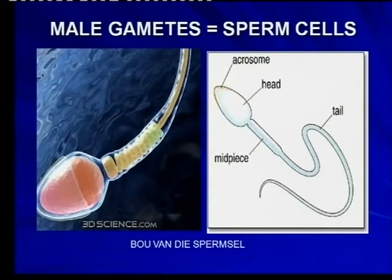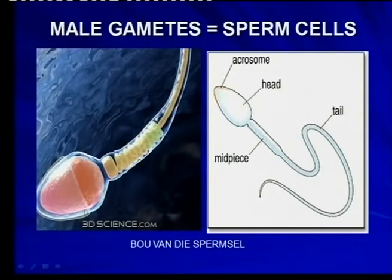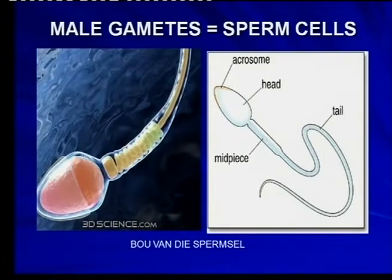Now as you look at the acrosome, here on the left side it looks like a drop that sits in the head of the sperm cell. Do you know what it contains, the acrosome? It contains very, very important substances — digestive enzymes, that will help to penetrate the egg shell during fertilization. You will also hear of hydrolytic enzymes — hydrolytic enzymes.